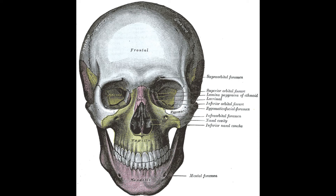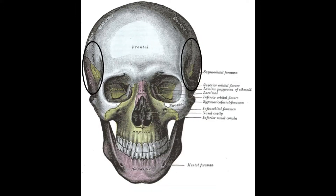In this video we're discussing the bones of the skull, primarily the bones associated with the temporomandibular joint or that act as attachments for muscles acting on the temporomandibular joint. We're starting with an anterior view where we can clearly see the frontal bone, maxilla, and mandible, including parts of the zygomatic bone.